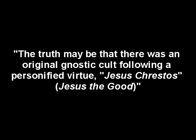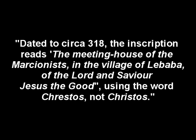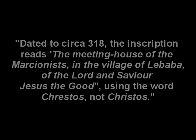And the plot thickens. As Kenneth Humphreys states on his website JesusNeverExisted.com, the truth may be that there was an original Gnostic cult following a personified virtue — Jesus Christos, meaning Jesus the Good. Consequently, they were called Krestianos, an appellation which seems to have attached itself at an early date to the sectarians of the heretic Marcion. Support for this possibility comes from the earliest known Christian inscription, found in the 19th century on a Marcionite church at Deir Ali, three miles south of Damascus, dated to around 318 CE. The inscription reads: 'The meeting house of the Marcionites, in the village of Le Baba, of the Lord and Savior, Jesus the Good.' The actual Greek word in the inscription is Krestos, not Christos.